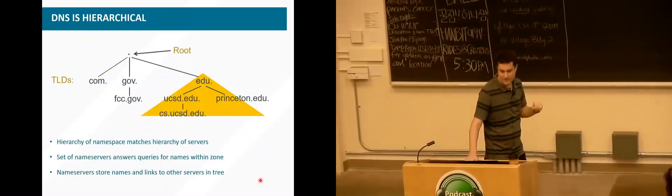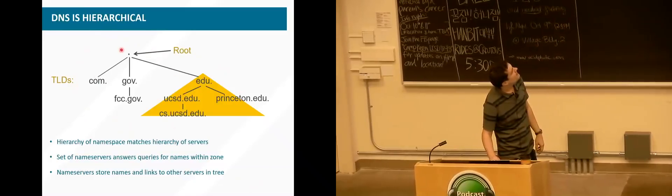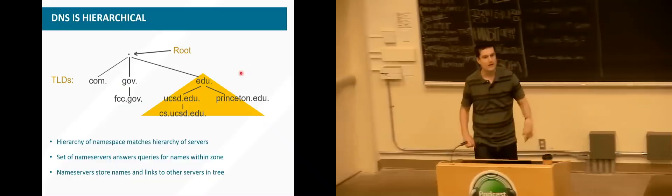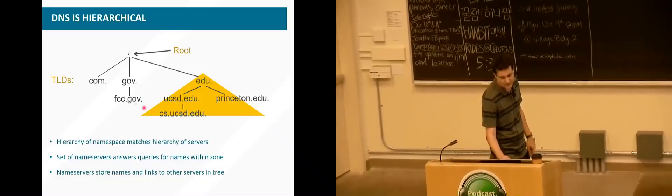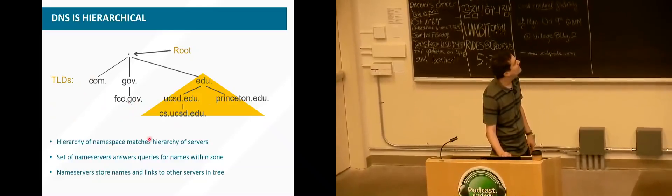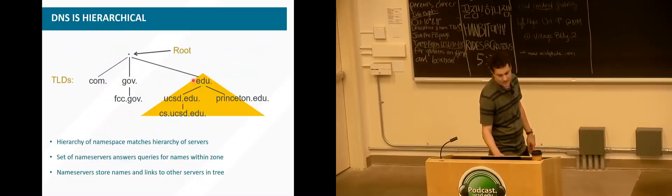The hierarchy in action: we have a root server at the top — you just know the address of that. Then we have top-level domains like .com, .gov, .edu — the last part of the domain name. Within each TLD you have organizations: Princeton, UCSD, FCC.gov, Google.com, and so on. The hierarchy of the namespace matches the hierarchy of the servers. The root servers, TLD servers, and authoritative servers — like at UCSD — form this layered structure.